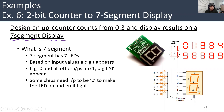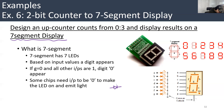We know the seven segment display — it has seven LEDs. Each LED looks something like this; this is basically the symbol for the LED in a circuit. Another LED like this, another LED like this.